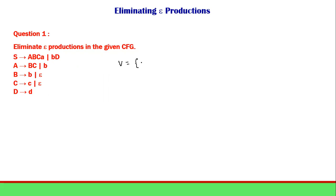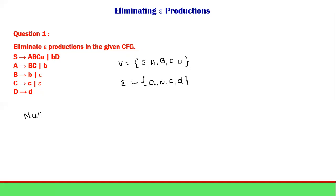The variables are those existing on the left-hand side of the productions: S, A, B, C, D. The terminals are the small letters on the RHS: a, b, c, d. To eliminate epsilon productions, first we should know where all the epsilon productions exist — we call these the nullable values. Wherever you find an epsilon production, that will be the nullable value.